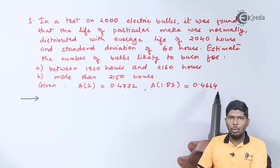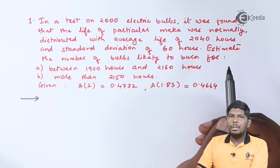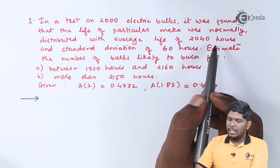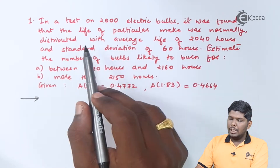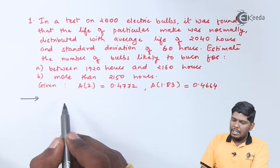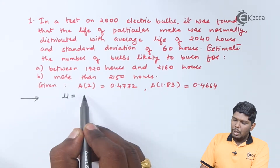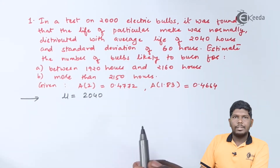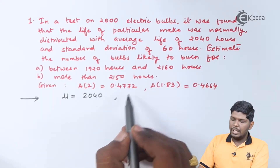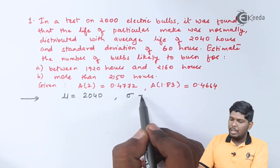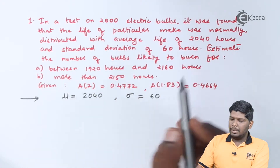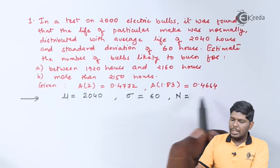In normal distribution, mean is represented by the symbol mu. Here, average life stands for mean, which is given as 2040 hours. Standard deviation is denoted by sigma, which is equal to 60 hours. The number of electric bulbs is capital N, which is equal to 2000.